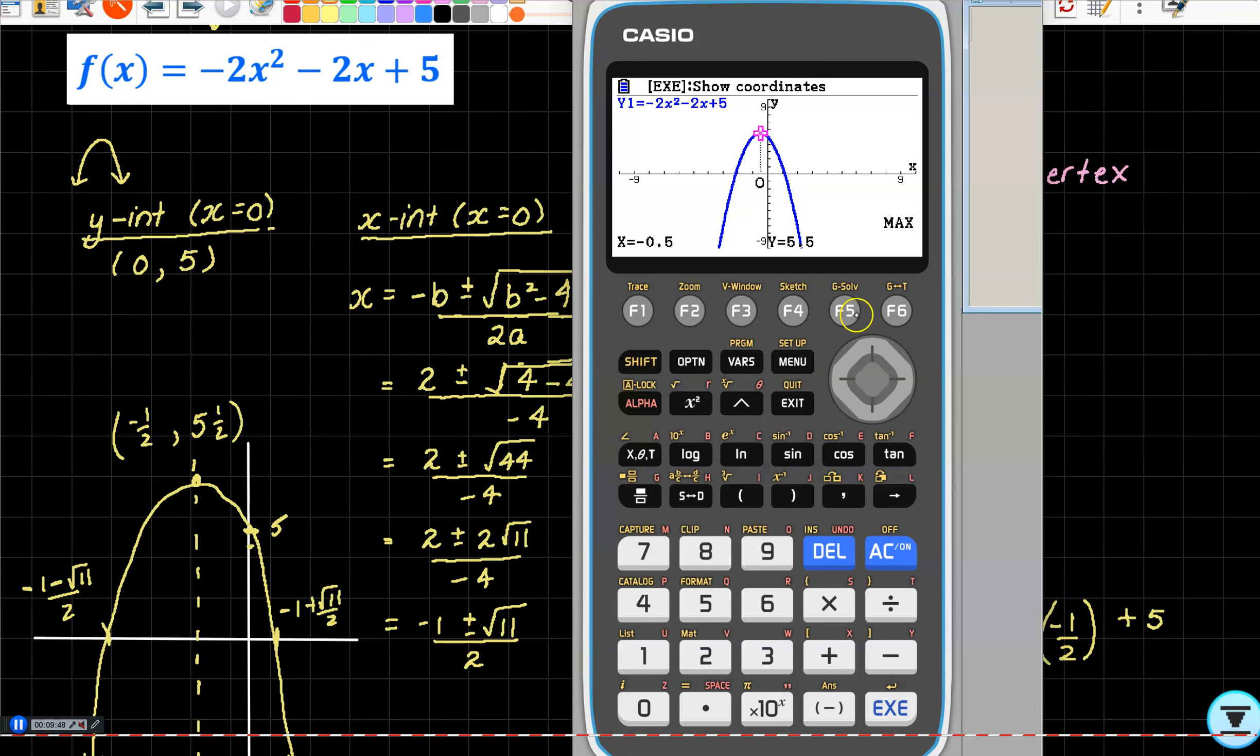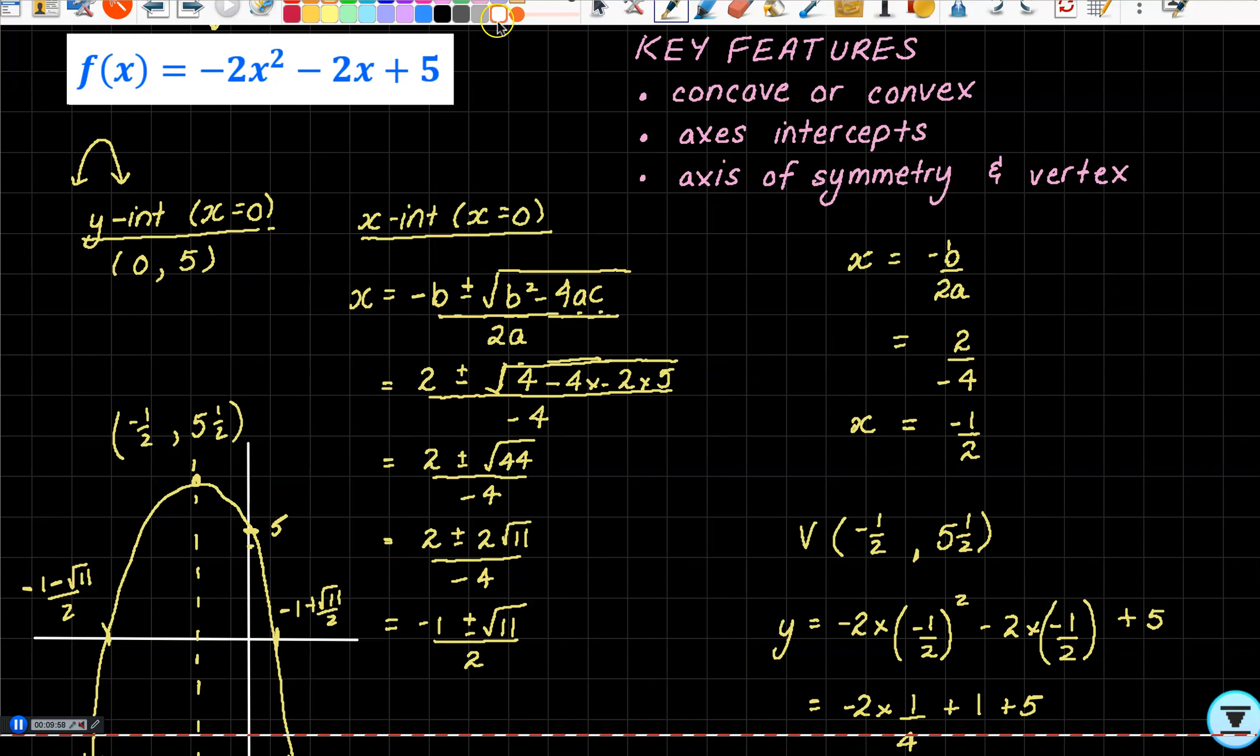G-Solve Max to get my vertex—things check out. G-Solve y-intercept—we shouldn't need to check but yep, it's there and it looks like a pretty good sketch. Just to finish off, I have noticed one thing about my sketch that I'm not happy with: I did not label my axes, so do make sure that that is done. Check everything else is labeled. Pretty good, I'm happy with that. On to the next question, which you can find in part two of the video.